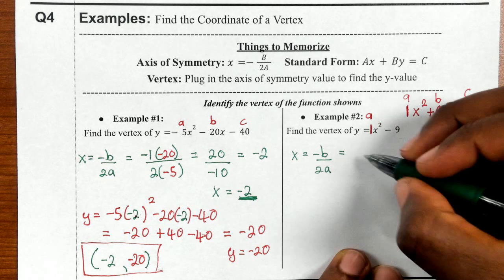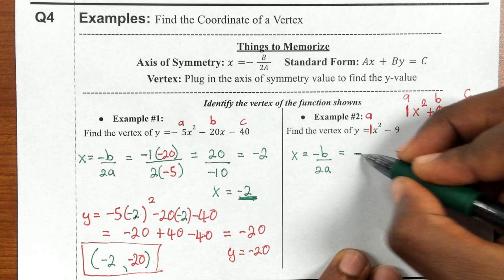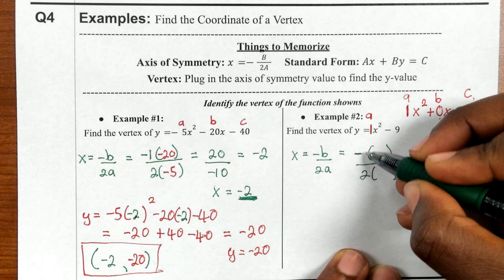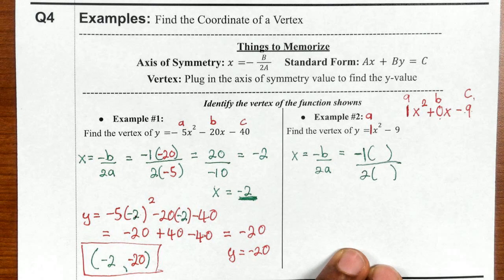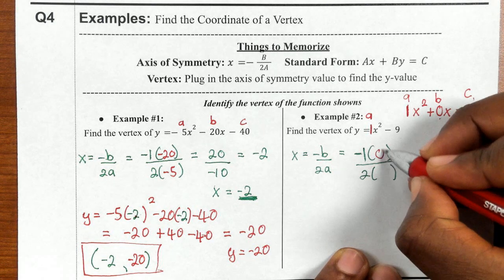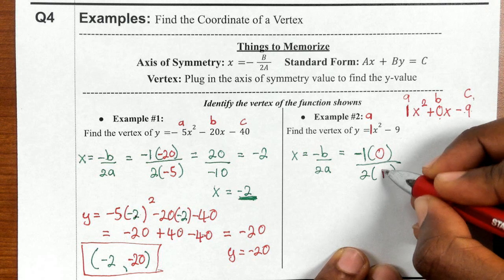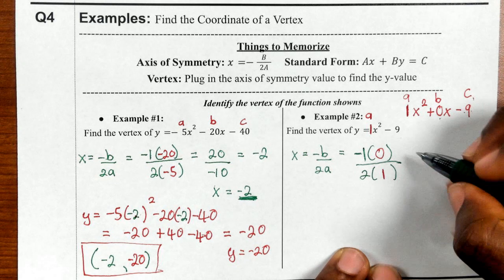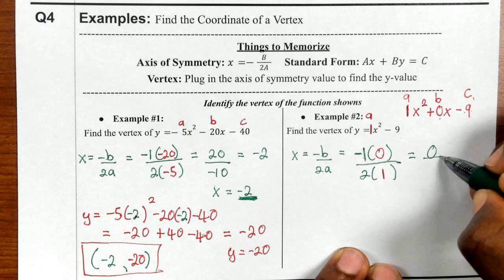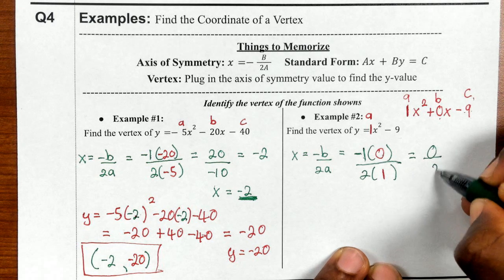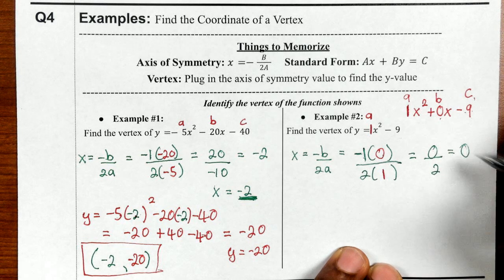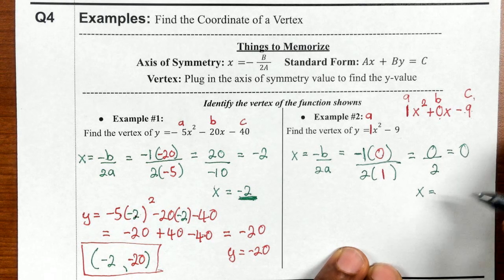Let's plug in. I'll set it up as negative parentheses over 2 parentheses. Plugging in 0 for b and 1 for a: negative 1 times 0 is 0; 2 times 1 is 2; 0 divided by anything is 0. So the x value of the vertex is 0.